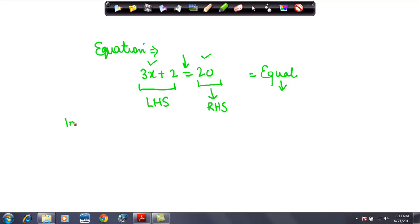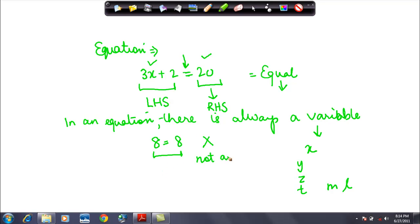In an equation, you always have one variable. There is always a variable and what is the variable? X. Now this X can be by any name: Y, Z, T, M, L, whatever you may want to call it. But one variable is also always there. So if you had this thing like what I was taking in the example, 8 is equal to 8, this is not an equation because there is no variable which is present here.